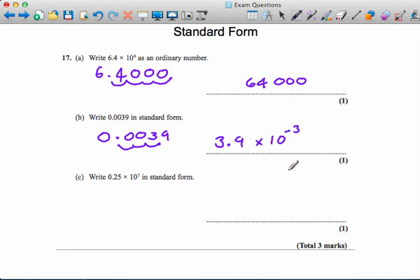Multiplying by 10 to the minus 1 is like dividing by 10—it moves the point one place to the left. So multiplying by 10 to the minus 3 moves it three places to the left.